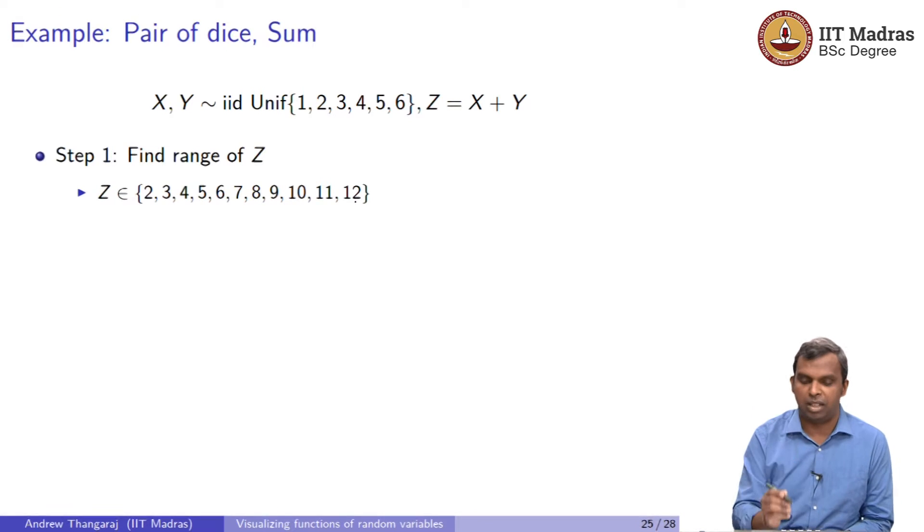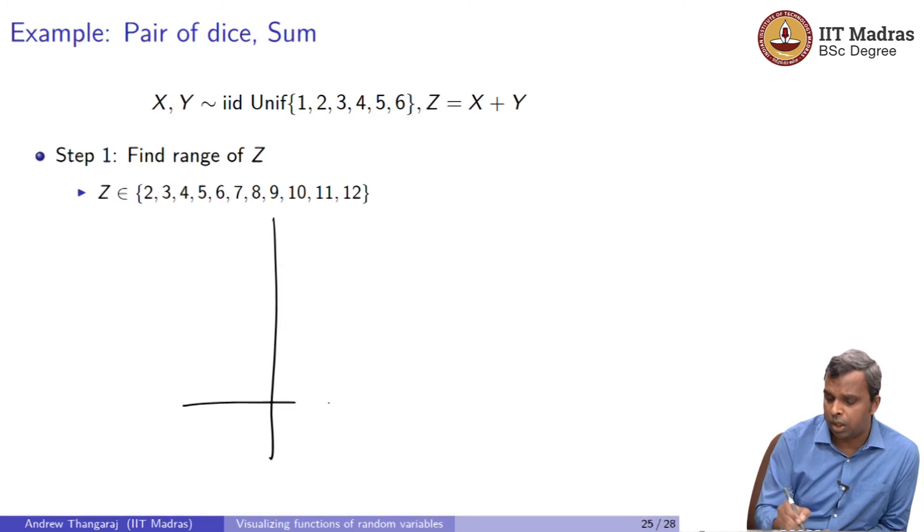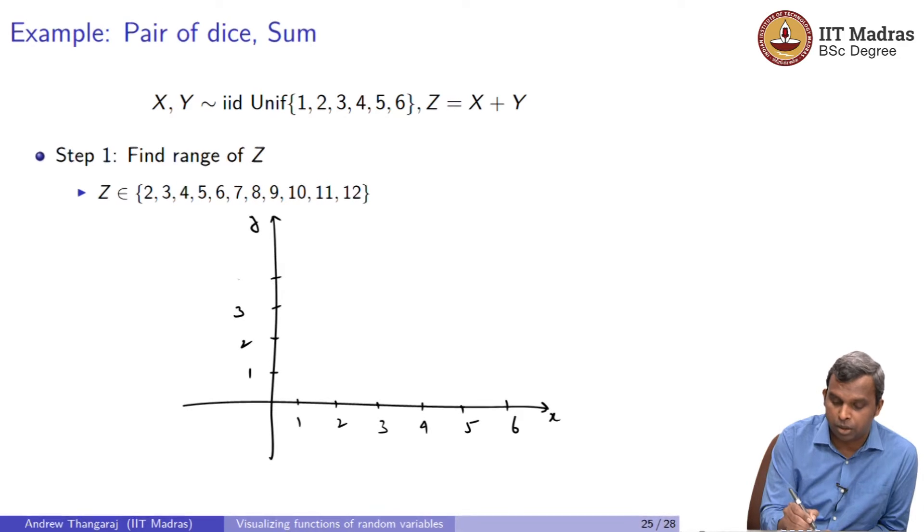Now, how do we do contours? That is what is the most interesting part. Let me just illustrate to you by drawing a picture here. First thing you do is to picture the joint PMF on the x, y axis. So, remember the joint PMF is 1 to 6. So, you have x, y here. I have 1, 2, 3, 4, 5, 6 and here I have 1, 2, 3, 4, 5, 6.